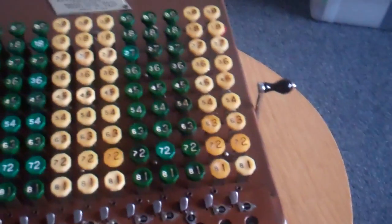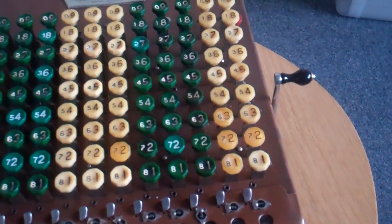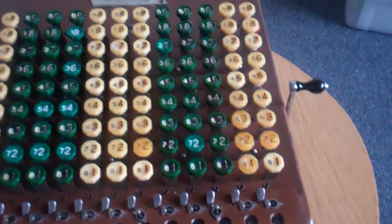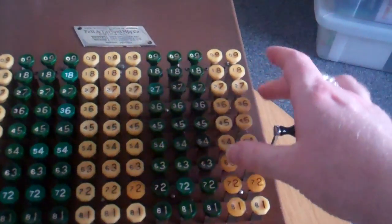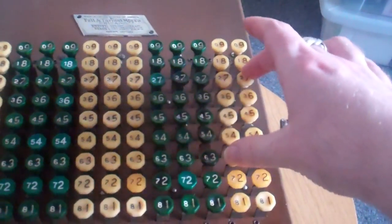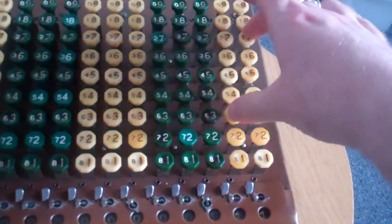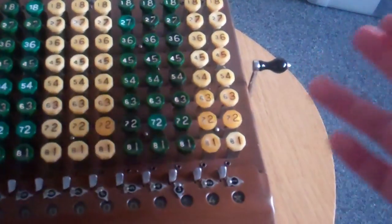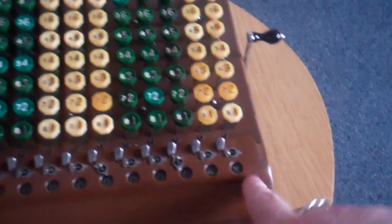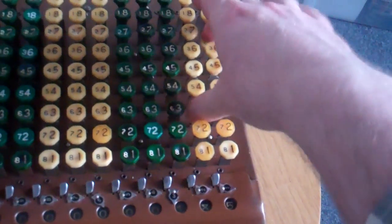Multiplication is just as easy. It's just repeated addition. So if you want to multiply 37 once, you just type it once, twice, three times, four times. Four times 37 is 148. Five, six, seven.